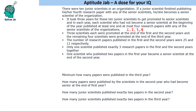These scientists publish papers with other scientists, and after their fourth research paper they are promoted to senior scientists. Three scientists each were promoted at the end of the first and the second years, and the remaining four scientists were promoted at the end of the third year. The number of research papers published in the first and the second years were 25 and 11 respectively. Only one scientist published exactly three research papers in the first and second years together. One scientist who published two papers in the first year became a senior scientist at the end of the second year.